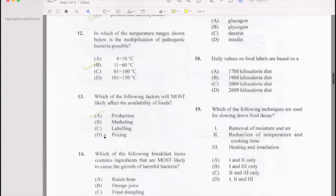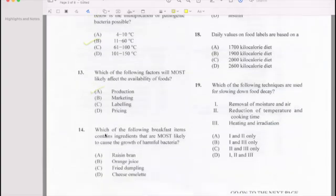Number 14: Which of the following breakfast items contain ingredients that are most likely to cause growth of harmful bacteria? Cheese omelet. Answer is D.